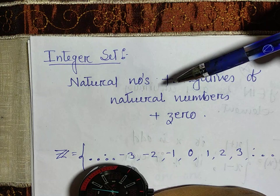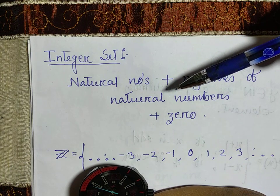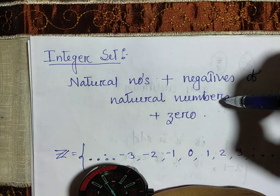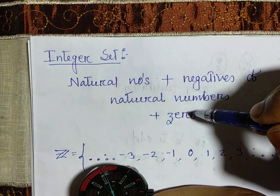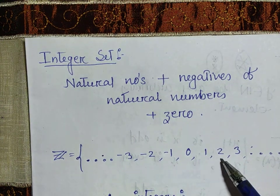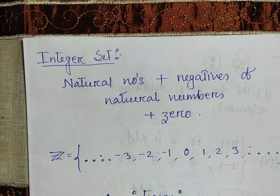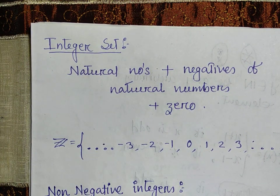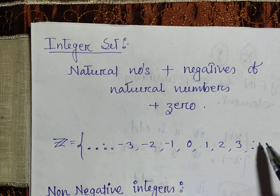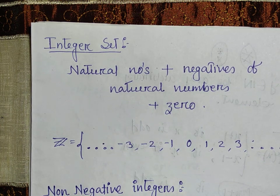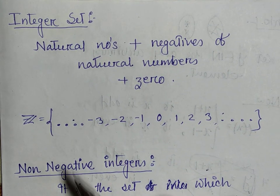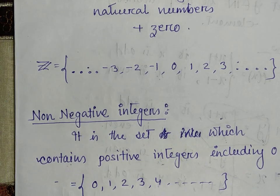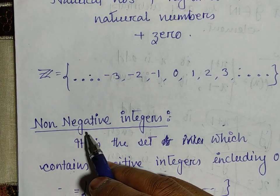The set of integers is the set which contains all the natural numbers and their negatives, including zero. We can consider 1, 2, 3 up to plus infinity as natural numbers; their negatives are minus 1, minus 2, minus 3 up to minus infinity; and including zero. This collection is the set of integers, represented by Z.